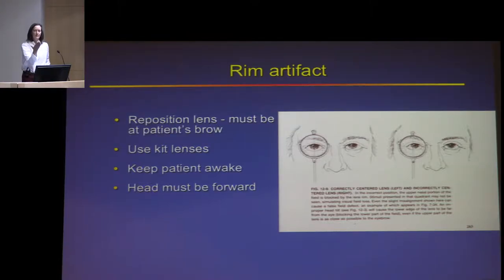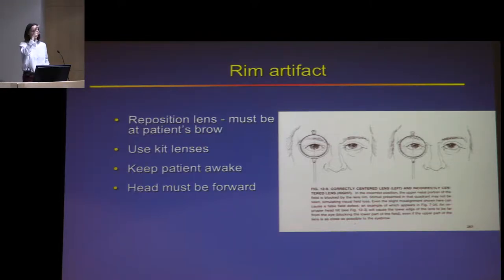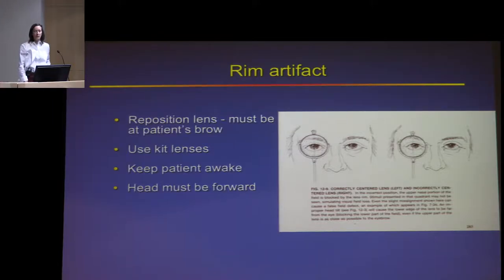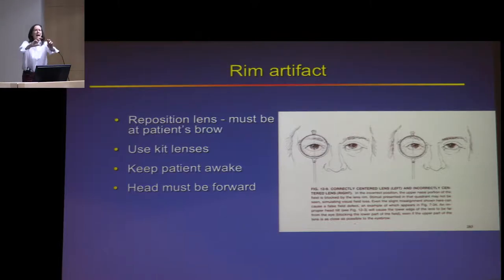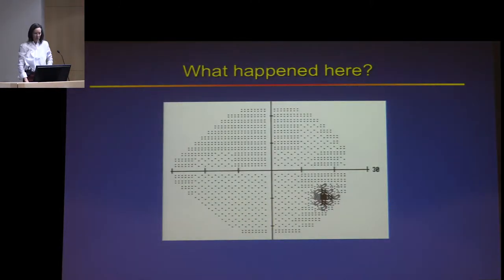With rim artifact, most often what's happening is that the corrective lens is on its little stand right up against the patient, and then over the course of testing the patient drifts back and ends up looking through the ring of the lens holder. It's best to use the machine's lenses; if you can't get the astigmatism correction you need, use the patient's own glasses as long as they're correctly positioned. Keep the patient's head up against the forehead rest — just like when you're trying to do a slit lamp exam and the patient keeps falling back.